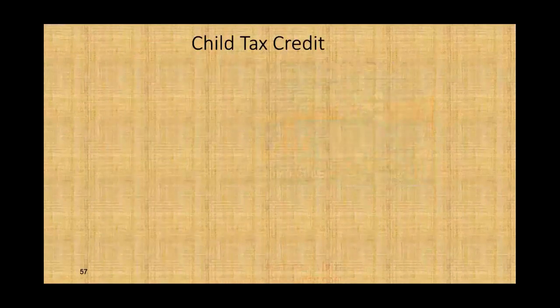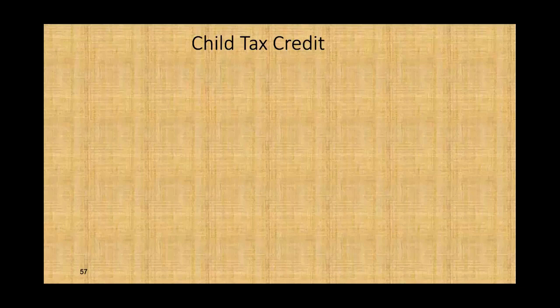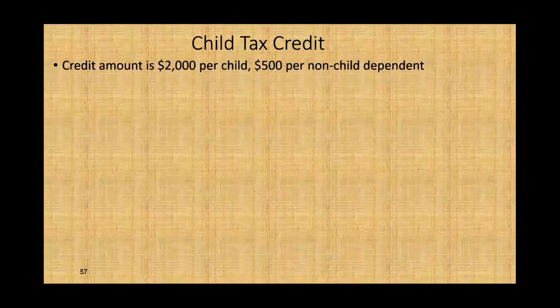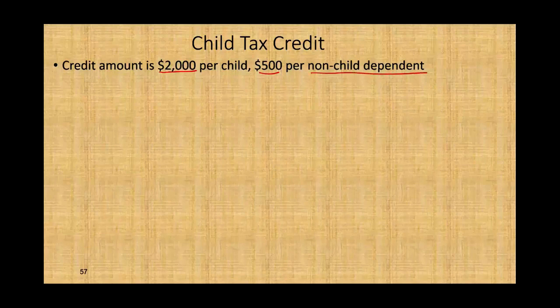Let's start with the child tax credit. Simply put, if you have a child, you'll get a tax credit — it's a very family-friendly tax credit. The credit is $2,000 per child and $500 if you have a non-child dependent — a dependent but non-child.